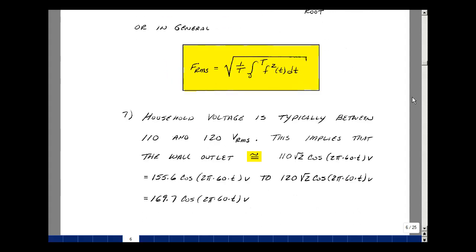If you look on the back of a stereo or even an outlet, sometimes they're labeled 110 or 120 volts RMS. That's the typical range of a household voltage in the United States. This implies that the wall outlet, if it was 110 volts RMS, would have a peak value of 110 times the square root of 2, times the cosine of 2 pi f times t, 60 hertz, and that would be 155.6 times that same cosine function. If you had a 120 volt RMS line in your house or apartment, the maximum would be 120 times the square root of 2, times the same cosine at 60 hertz, and that would correspond to 169.7 volts.